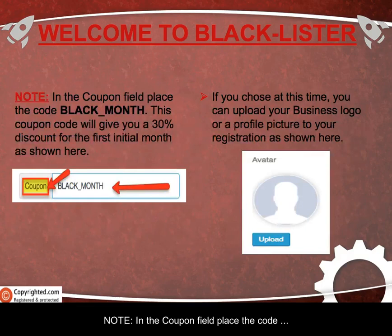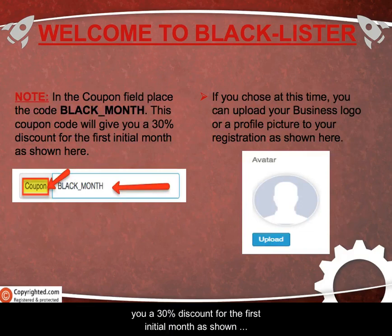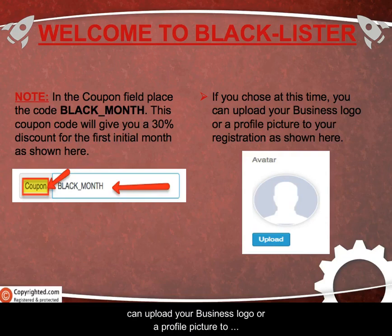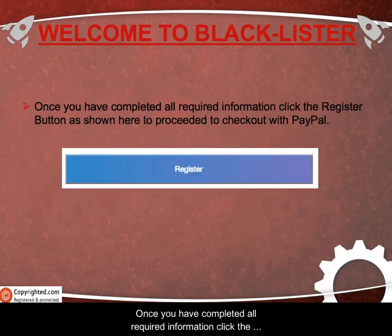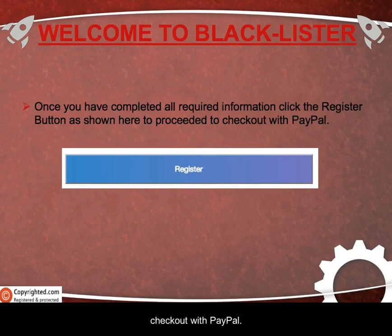In the coupon field, place the code black_month. This coupon code will give you a 30% discount for the first initial month as shown here. If you choose at this time, you can upload your business logo or a profile picture to your registration as shown here. Once you have completed all required information, click the Register button as shown here to proceed to the checkout with PayPal.